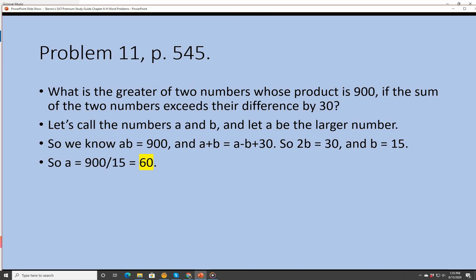Problem 11, page 545. What is the greater of two numbers whose product is 900 if the sum of two numbers exceeds their difference by 30? Let's call the numbers A and B, and let A be the larger number. So we know AB, the product is 900, and A plus B equals A minus B plus 30. We can combine like terms. We can add B to each side to get 2B, subtract A from each side to get rid of it. So 2B equals 30, and B equals 15. So then we can find the larger number simply by dividing 900 by 15, which is 60.